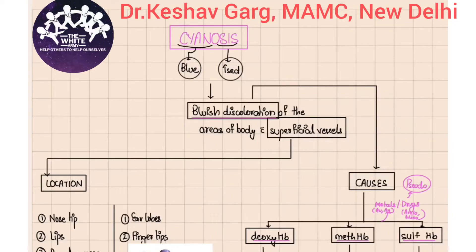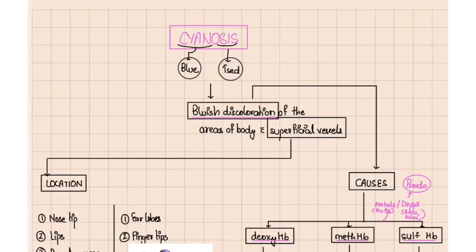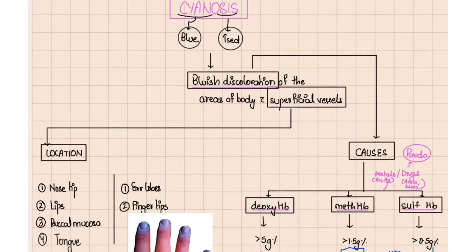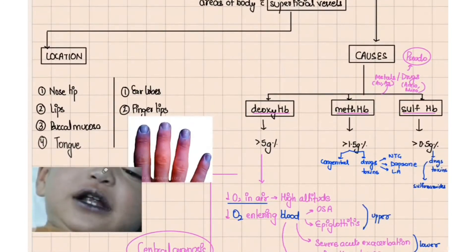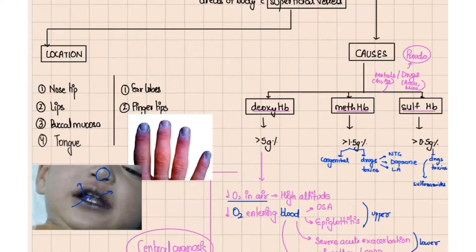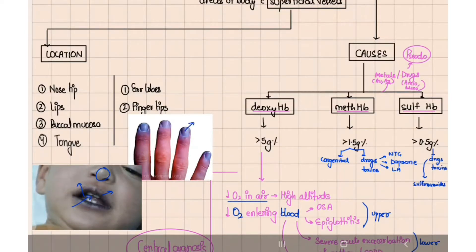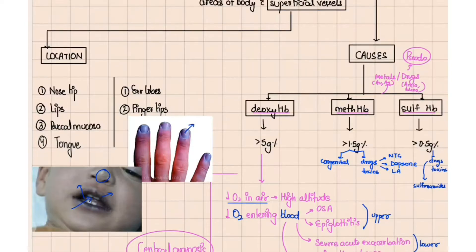In cyanosis, 'cyano' means blue and 'osis' means increased, so cyanosis refers to the blue discoloration of the skin, mainly in the areas of the superficial vessels. We look for this blue discoloration over the nose tip, the lips, the tongue, the buccal mucosa, the earlobes, or the fingertips.